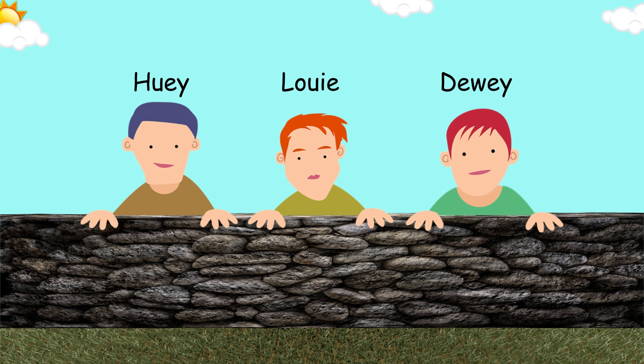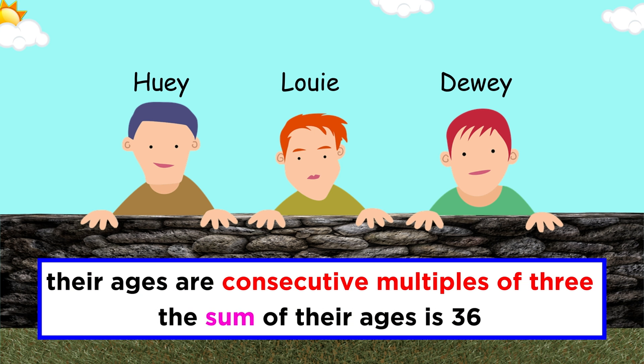What about something a little harder? Say there are three brothers, Huey, Louis, and Dewey. Their ages are consecutive multiples of three, and the sum of their ages is thirty-six. How old are they?